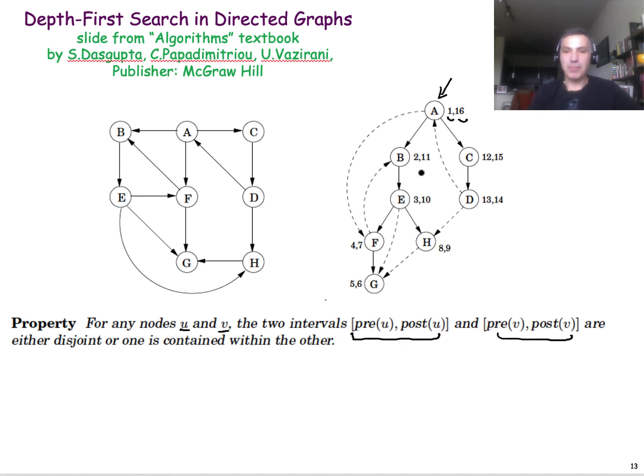For example, the interval for B, 2.11, is completely disjoint from the interval from C, which is 12.15. On the other hand, the interval for B, 2.11, is completely contained, included, in the interval of A, 1.16.